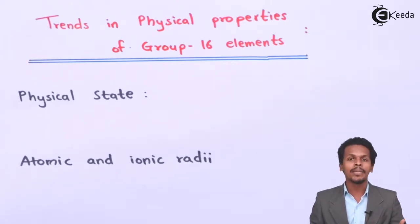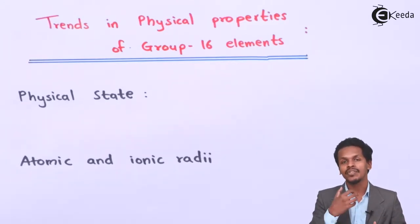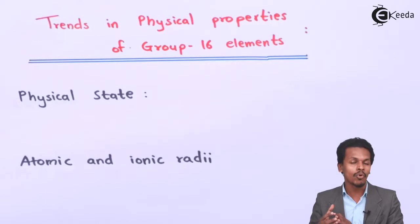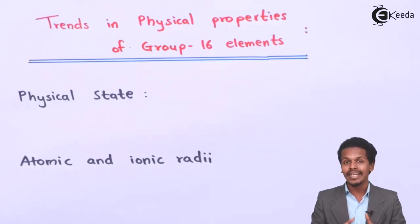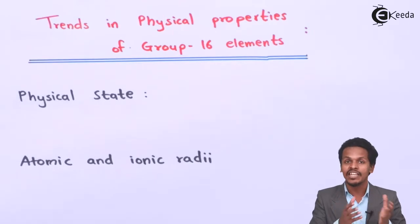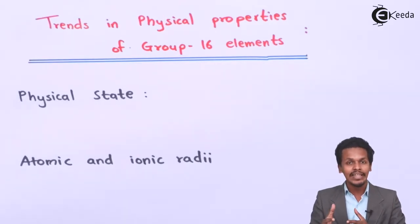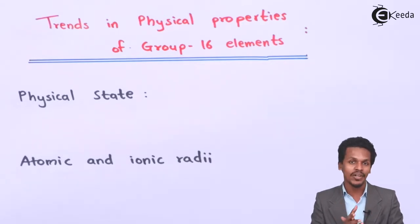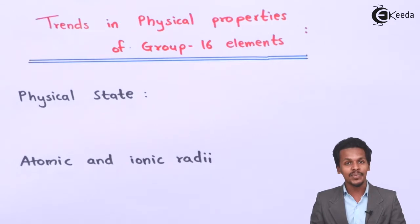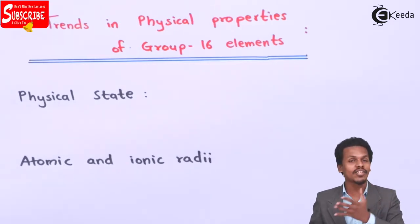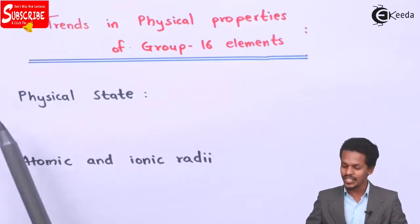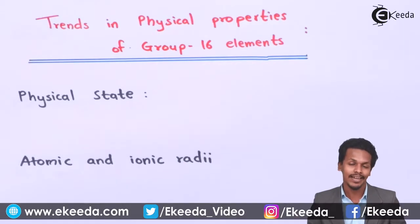If we talk about the group 16 elements, it obviously starts with oxygen and ends with polonium. It has been found that oxygen is the only element in group 16 which is present in a gaseous phase, while the rest of the elements — from sulfur to polonium — are present in a solid state.